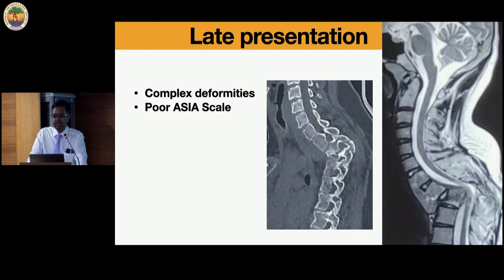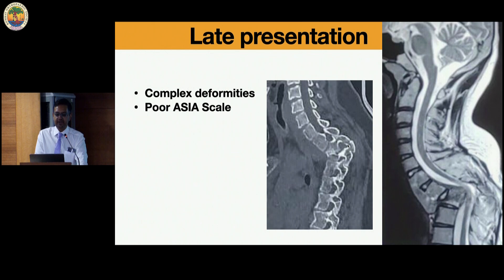For example, this cervicothoracic lesion with more than three vertebral body loss is commonly seen at our institution. You can see there is significant kyphosis, making this area very difficult to approach. To address this deformity we really have to go long and fuse, which leads to a lot of stiffness. These cases present late with very poor neurological status.